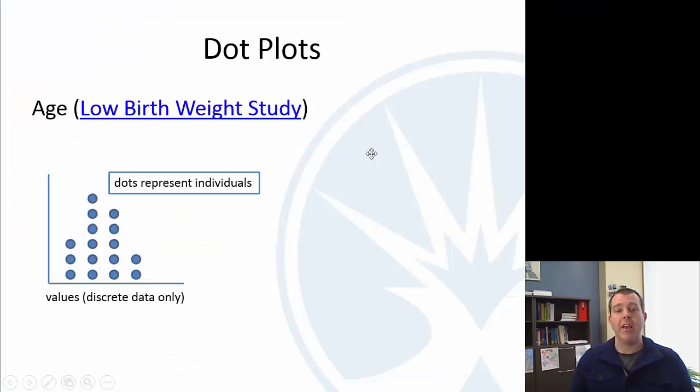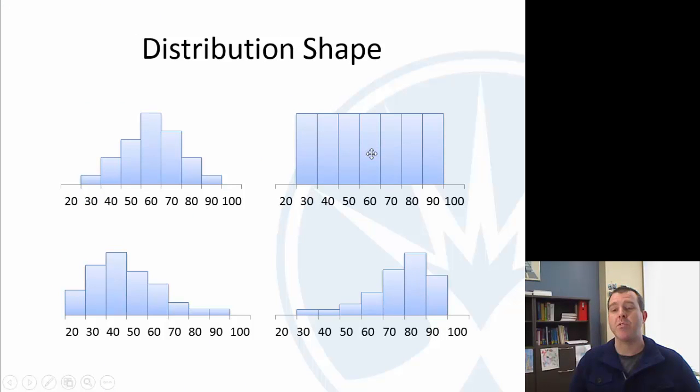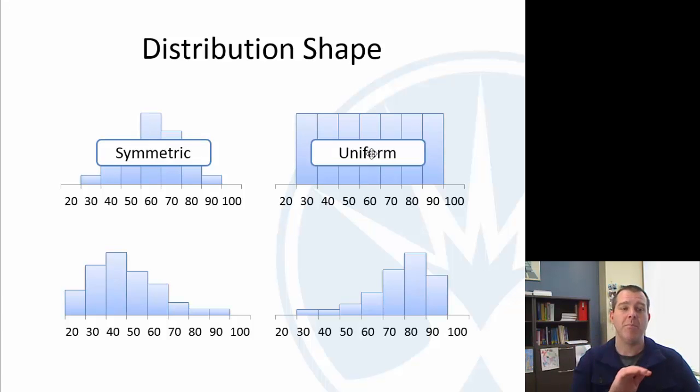Alright. Last thing I want to talk about is looking at different histograms. We have some vocabulary for the distribution shape. So I have four different histograms here. The first one you can see, it's not perfect, but it kind of has a triangle or a bell-shaped. It's not exactly the same on both sides, but very similar. So we call that a symmetric or bell-shaped distribution. A uniform distribution is when uniform, all the same. So uniform distribution, they're all the same.